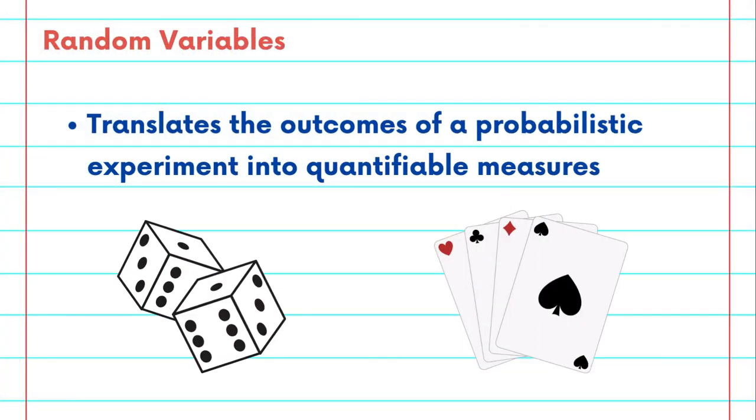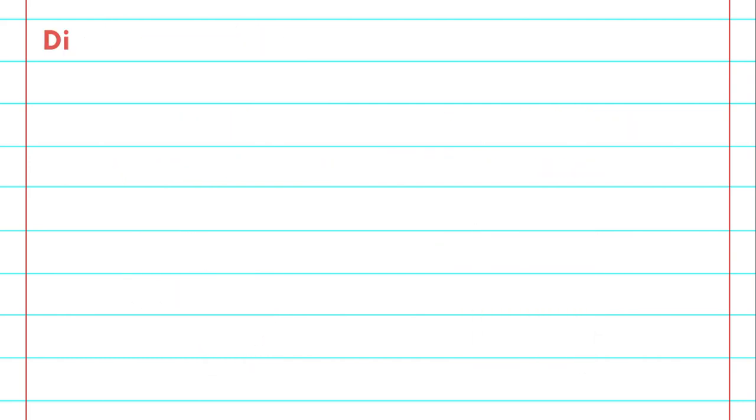Random variables are an important mechanism in statistics, translating the outcomes of a probabilistic experiment into quantifiable measures.